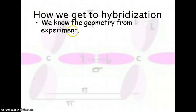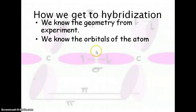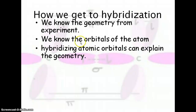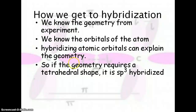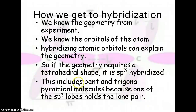How do we actually determine hybridization? We know the geometry from experimentation, and we know the orbitals of the atom. If we hybridize the atomic orbitals, it explains the geometry we've learned from experiments. If the geometry requires a tetrahedral shape, it is going to be sp3 hybridized. This also includes any tetrahedral electron geometry that might have lone pairs — bent and trigonal pyramidal molecules would still have sp3 hybridization, but some of the sp3 lobes will just be holding a lone pair instead of a bonding pair.